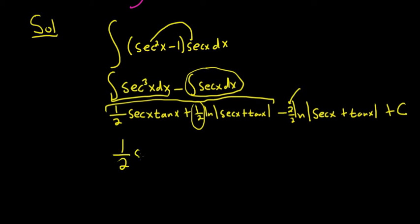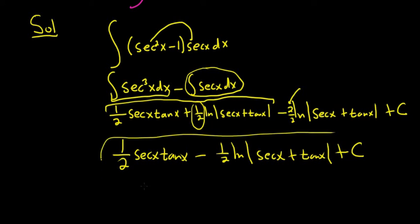So this is 1 half secant x tangent x minus 1 half natural log absolute value of secant x plus tangent x, and then plus our constant of integration, C. So unfortunately in this problem, to show all the work, you would have to actually integrate this.